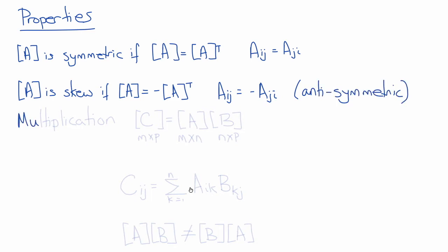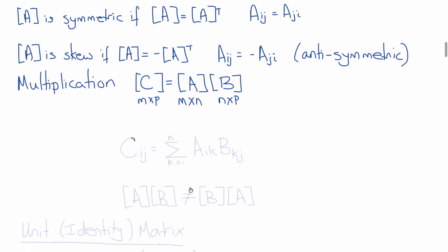We can multiply two matrices. The product of matrices A and B is C. If A is M by N and B is N by P, then C is M by P. In index notation, the components IJ of C equal the sum from K equals 1 to N of AIK times BKJ. It's important to remember that matrix multiplication is not commutative — A times B is not equal to B times A.